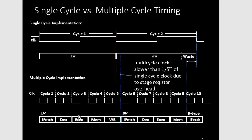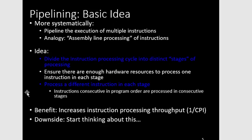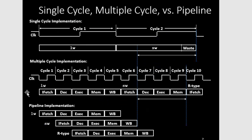In multi-cycle, you divide each instruction into subdivisions: fetch, decode, execute, memory, and write back operations. Each subdivision takes one clock cycle — fetch has clock cycle one, decode has clock cycle two, execute has clock cycle three, and so on.